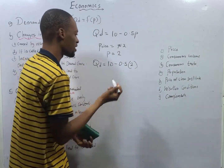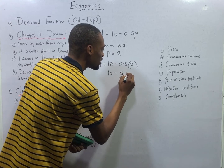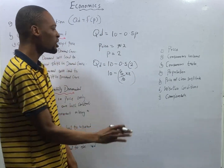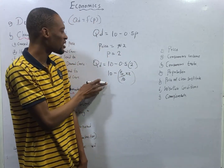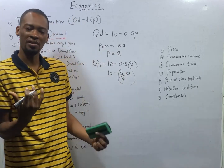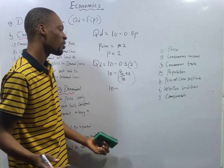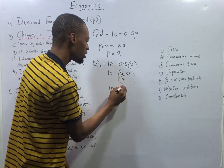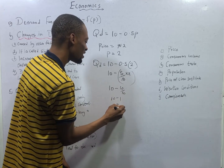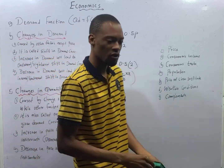So this becomes 10 minus 5 over 10 times 2. In BODMAS, you deal with multiplication parts before subtraction. You get: 10 minus (5 times 2, that is 10) divided by 10. This gives 10 minus 1, which is 9. So quantity demanded equals 9, depending on how the questions come.